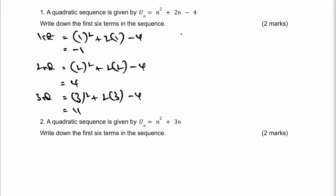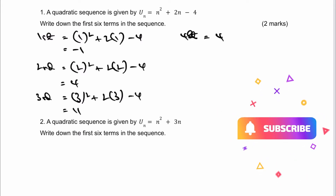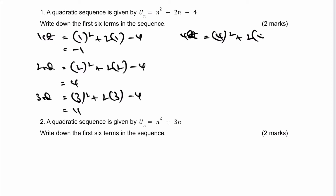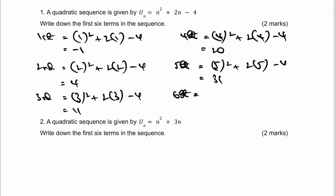The fourth term is 4 squared plus 2 times 4 minus 4, which gives 20. The fifth term is 5 squared plus 2 times 5 minus 4, which gives 31. And the sixth term is 6 squared plus 2 times 6 minus 4, which gives 44. So the first six terms in the sequence are minus 1, 4, 11, 20, 31, and 44.